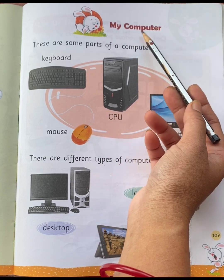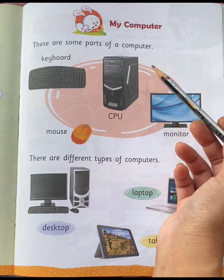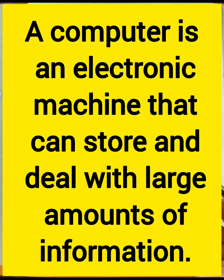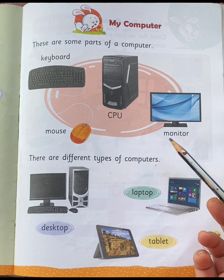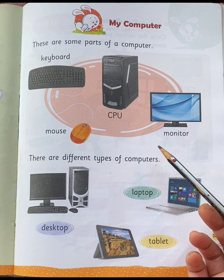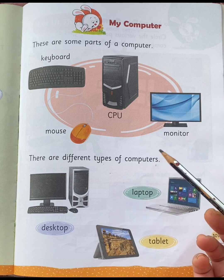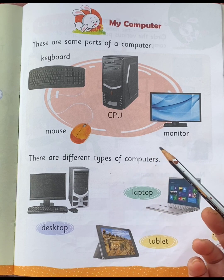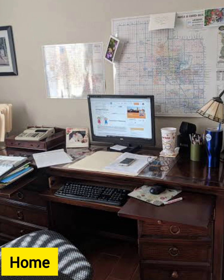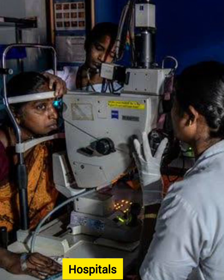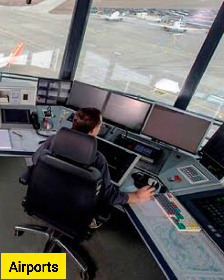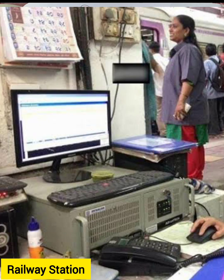First we will know what is a computer. A computer is an electronic machine that can store and deal with large amounts of information. A computer is a very useful machine and it is used at several places such as schools, home, banks, hospitals, airports, and railway stations.